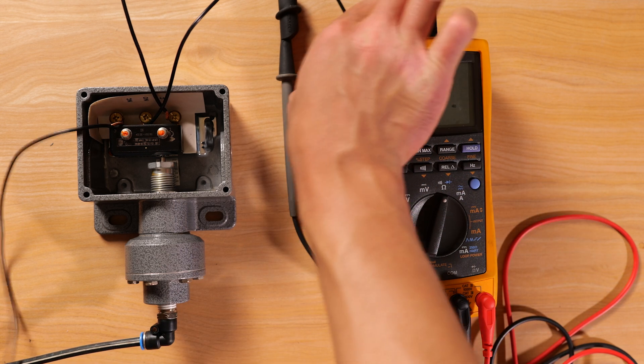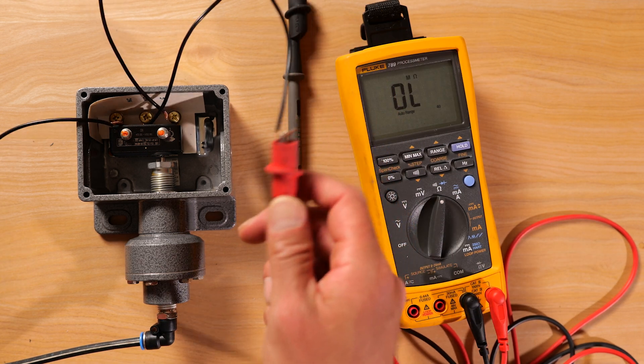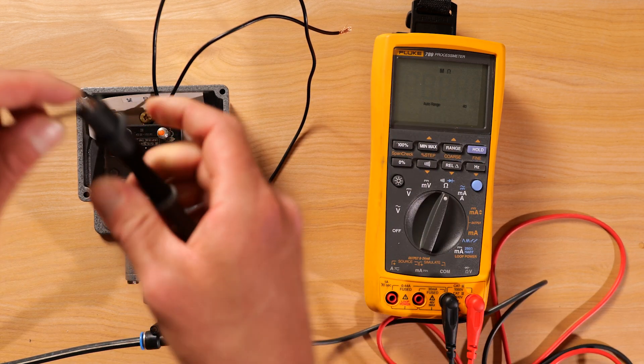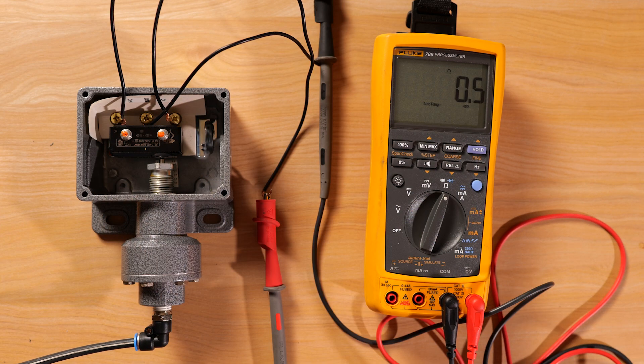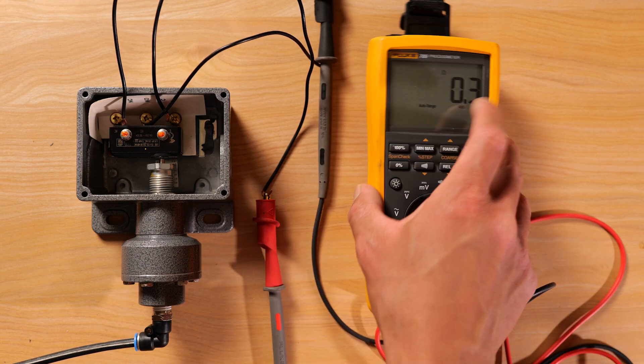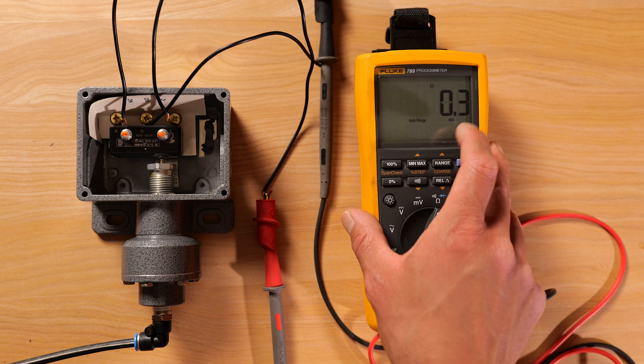So if we were to test that over to the common and closed without any pressure applied, right? So zero pressure applied as a process into the diaphragm, you have 0.3 ohms or you have continuity already.